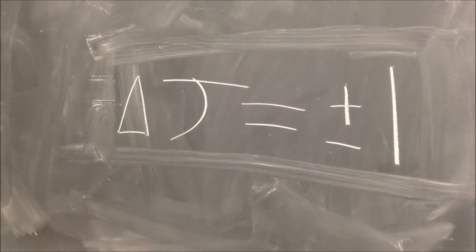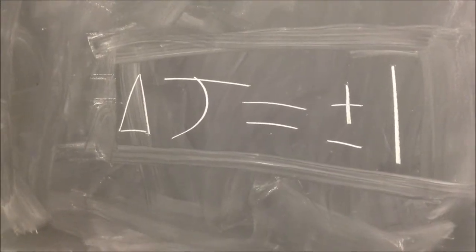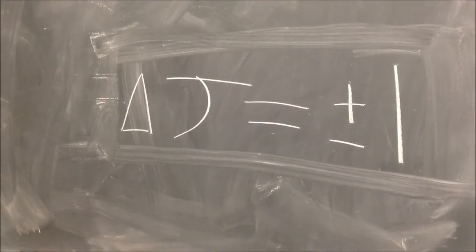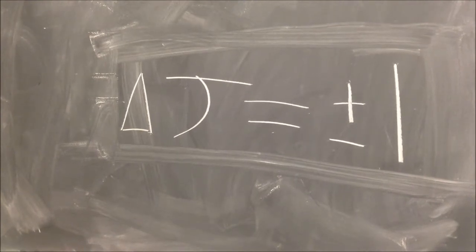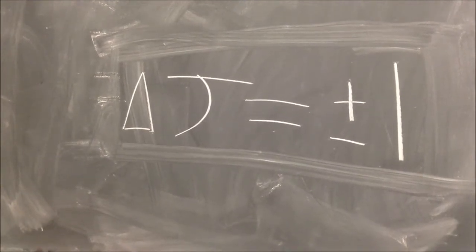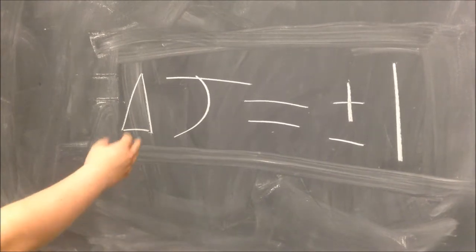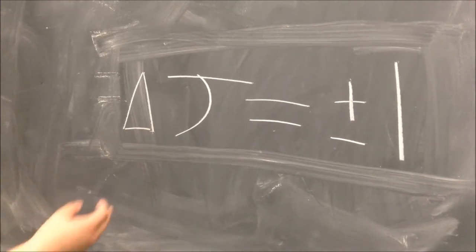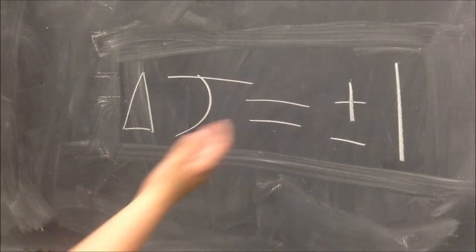For our rigid rotor system, the only transitions allowed are only between the adjacent states of the quantum number. As you can see here, I marked it down where we have delta J, the change of the quantum number, equals plus or minus 1.